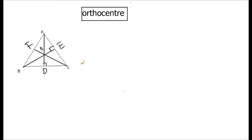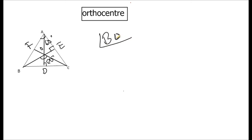The orthocenter has an interesting property: angle BOC equals 180 minus angle A. If angle A is 60 degrees, then angle BOC is 180 minus 60, which is 120 degrees. This type of question is frequently asked in exams, so this property is very important.